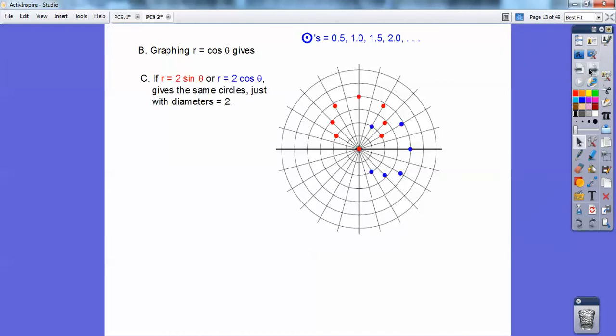So r equals 2 sine of theta, and r equals 2 cosine of theta gives the same circles with the diameters equal to, in this case, 2. Notice I did the key now up here as 0.5, 1 and so on. So when you have 2 cosine right there, there's my diameter right there of 2 because of that 2 right there.